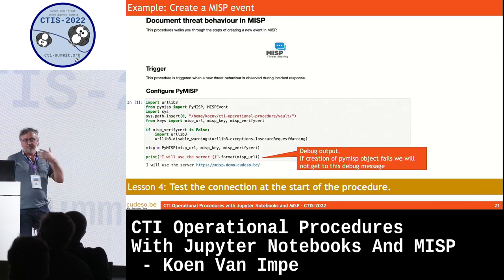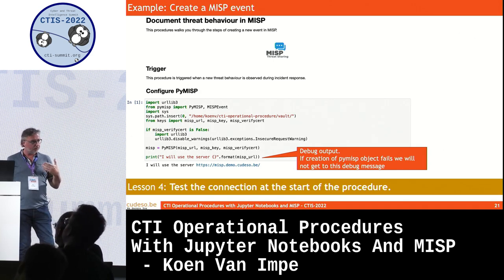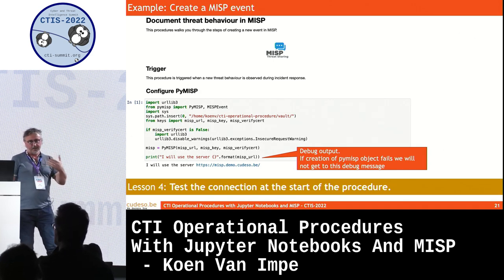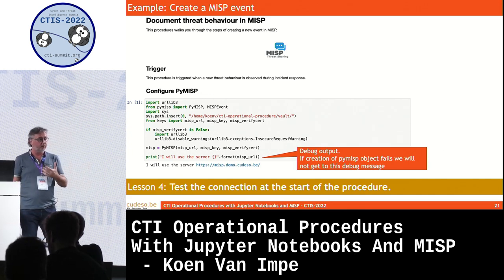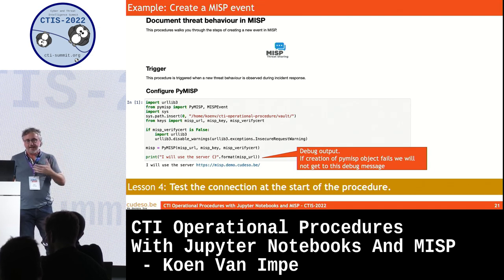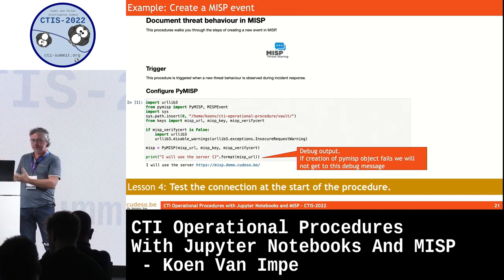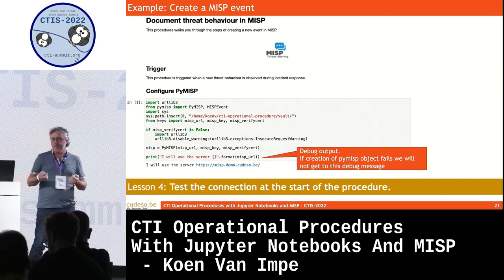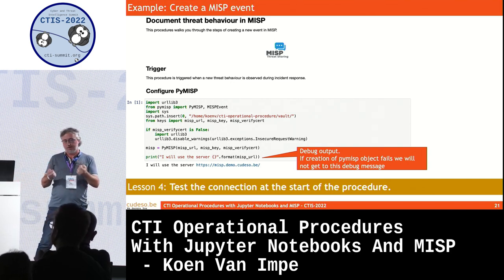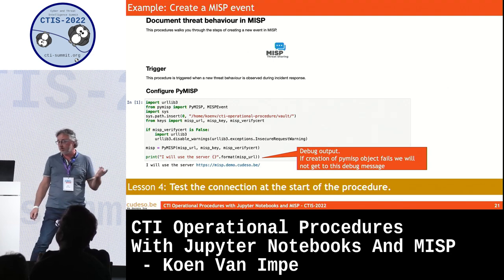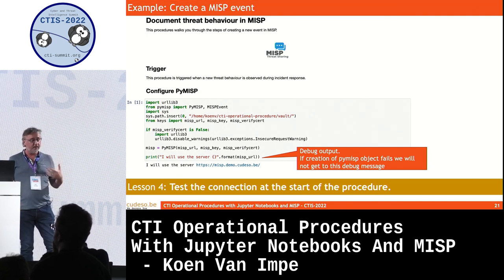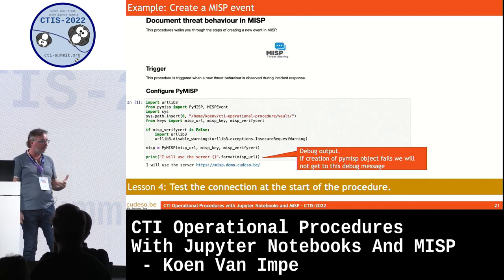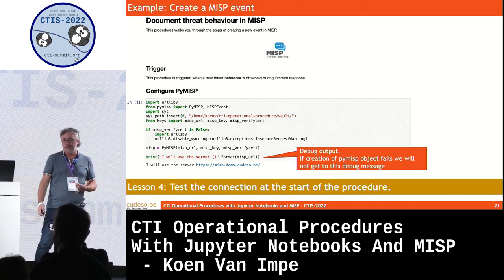Another lesson: before you start the operating procedure, do a communication check. Make sure you're able to access your MISP server. In this example, I print out the server I'm going to use for the operational procedure. The PyMISP object is instantiated, and if there's a connection error — the URL is wrong or the API key is not correct — that PyMISP object won't be instantiated and I'll get an error. By just printing that message, I know the connection is okay and I can continue.